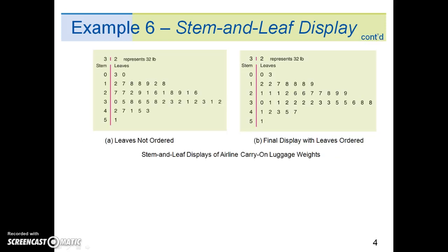To make a stem-and-leaf display, we break the digits of each data value into two parts. The left group of digits is called a stem, and the remaining group of digits on the right is called a leaf.